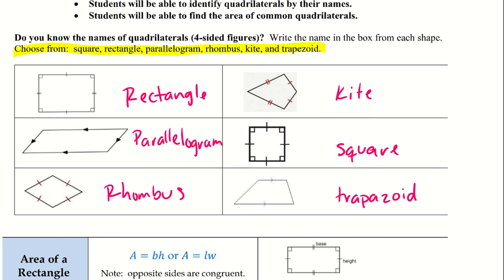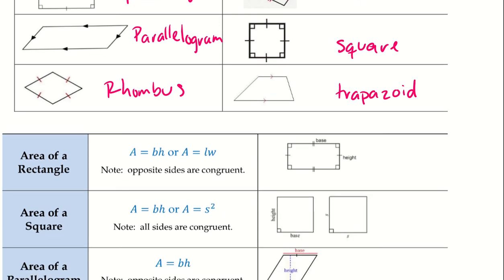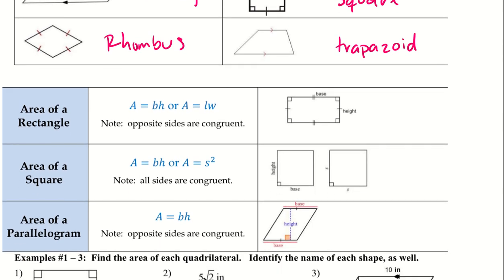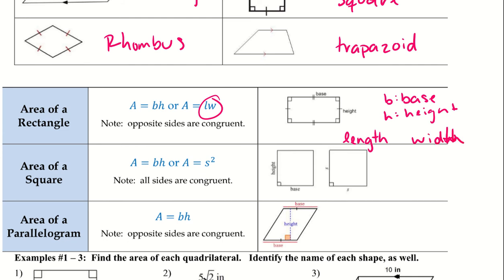A trapezoid has just the top and bottom parallel to one another. Now let's start with the area of a rectangle: area equals base times height, where B stands for base and H stands for height — just like with triangles. You may also see it written as L times W, for length and width. Either one works for rectangles.